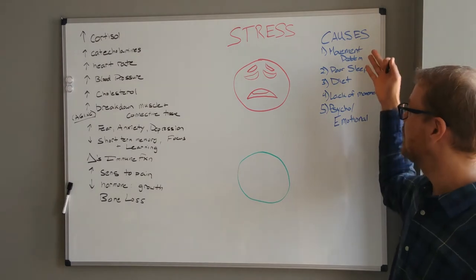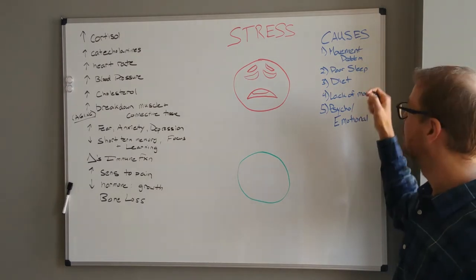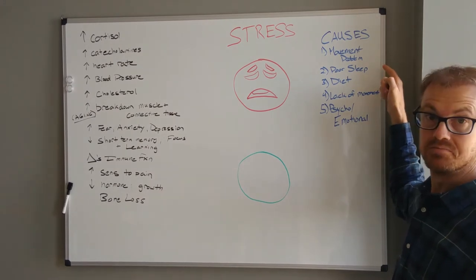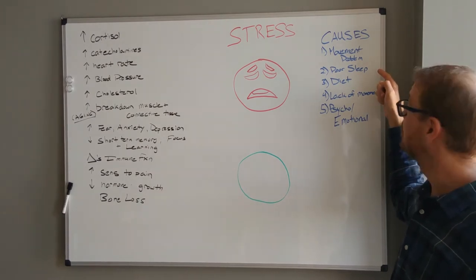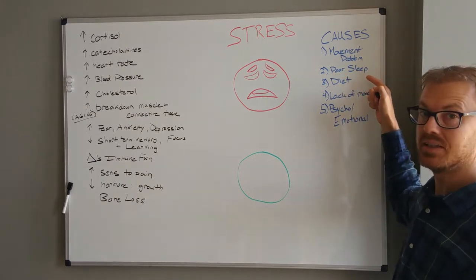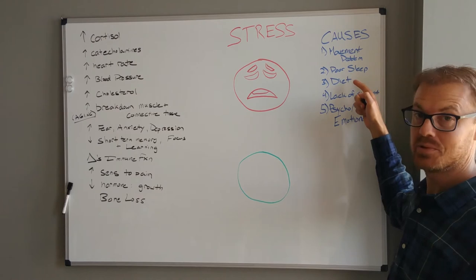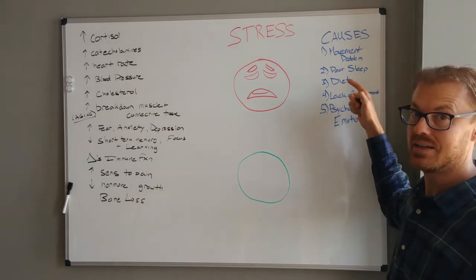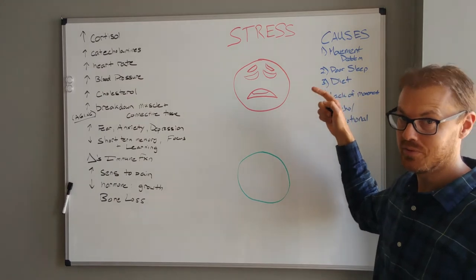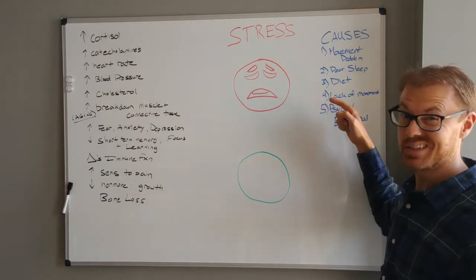So there's different causes to why we have stress. I'm going to focus today on movement problems, but also bad sleep, which is pretty much super prevalent in America. People are not getting enough sleep. Diet - 60% of most Americans' diets come from gas station food, stuff that's highly processed with refined oils and sugar. Makes us sick.